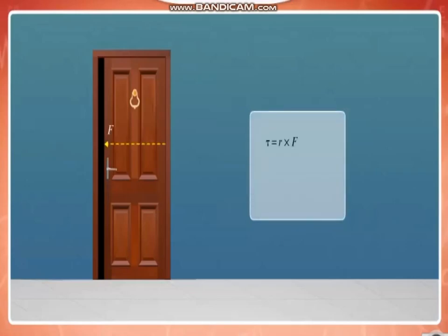Torque is represented as the cross product of the position vector and the force vector. Here, the position vector is the vector from the hinge line to the point of application of the force. The magnitude of the torque is expressed as shown. Here, phi is the angle between the position vector and the force vector.